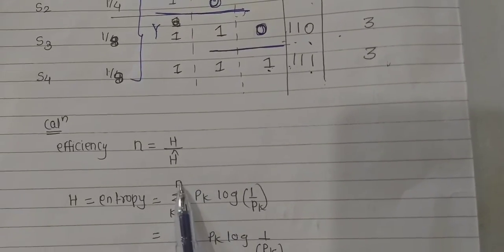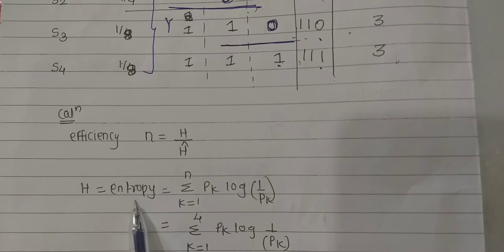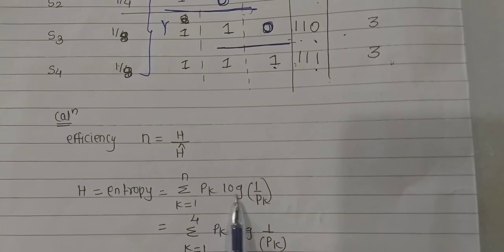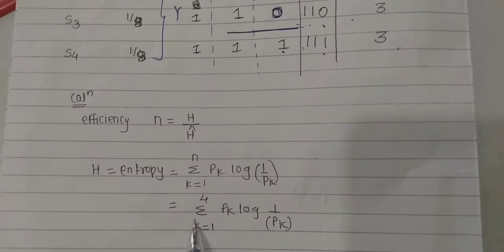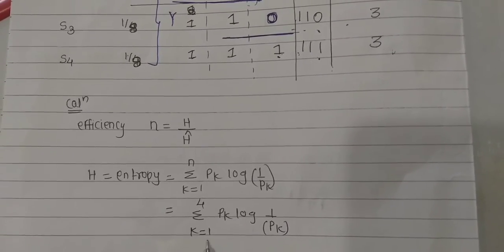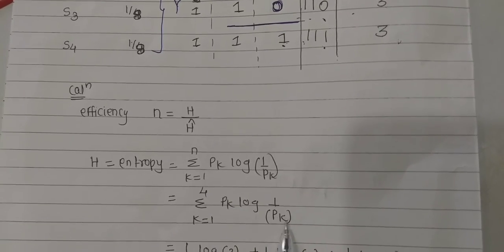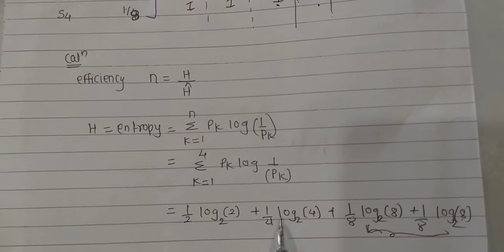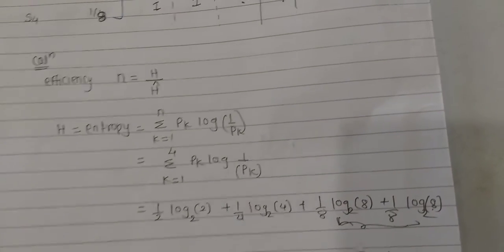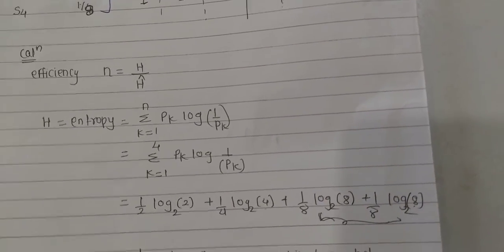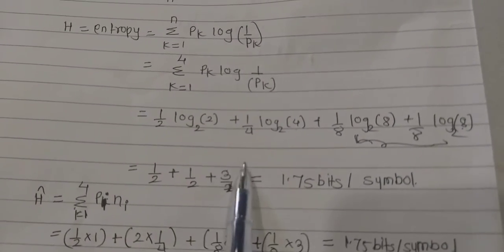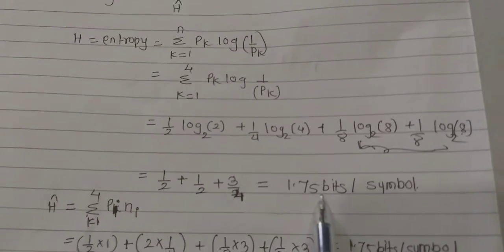Efficiency is H divided by H_cap. H is the entropy, calculated as the summation from k=1 to n of p_k × log(1/p_k). With four symbols, this is (1/2)×log(2) + (1/4)×log(4) + (1/8)×log(8) + (1/8)×log(8), which gives 1/2 + 1/2 + 3/8 + 3/8.